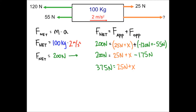We add 175 to both sides and get 375 Newtons equals 25 Newtons plus X. Then we subtract 25 from each side and we find that the missing force is going to be 350 Newtons, and that is going to be to the right.